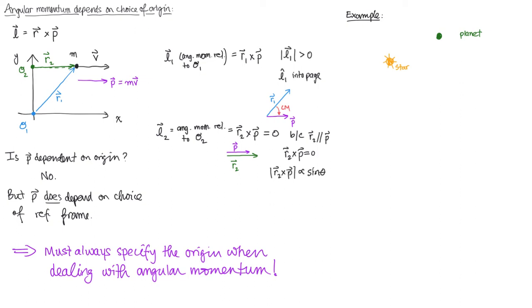Here's another example of this idea of angular momentum depending on the choice of origin. Consider a system where we have a star and a planet in orbit about that star, and let's say that planet is orbiting in an ellipse with the star at a focus of the ellipse. We can ask the simple question: is the angular momentum of this planet conserved?